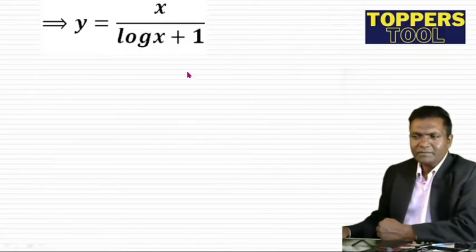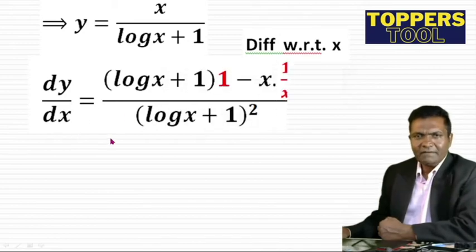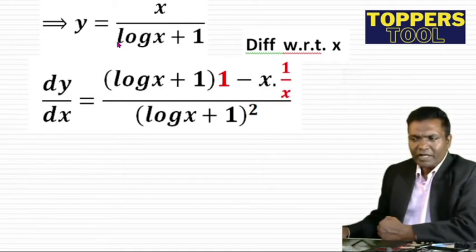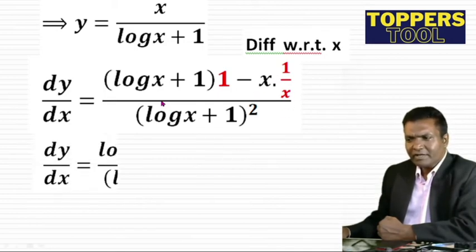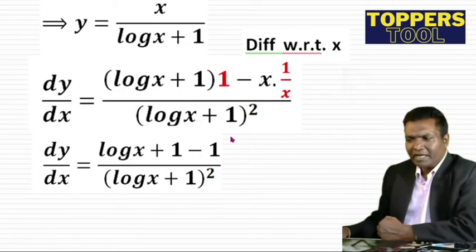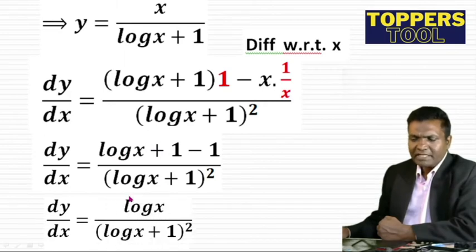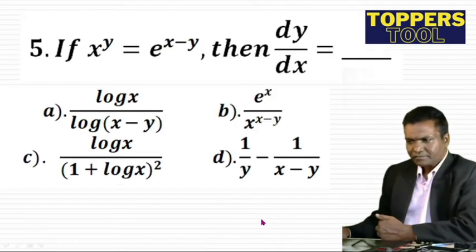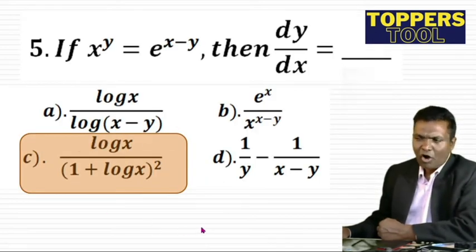Now differentiate y = x/(log x + 1) using the quotient rule. dy/dx = [(log x + 1)·1 - x·(1/x)] / (log x + 1)² = [log x + 1 - 1] / (log x + 1)² = log x / (log x + 1)². This matches one of the options and is the correct answer.